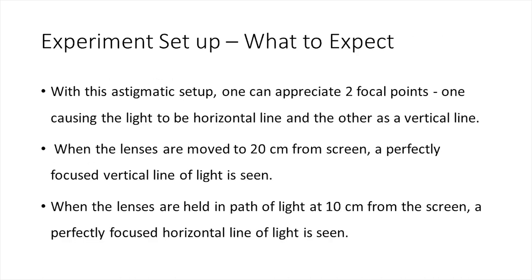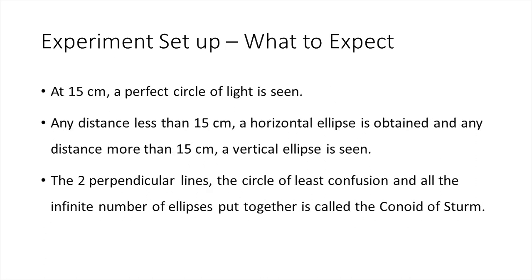So what should we expect from this experiment? Obviously, we are expecting to see two principal foci, one horizontal line and the other a vertical line. When the lenses are held at 20 centimeters from the screen, a vertical line is seen and this is the first principal focus. And when the lens is at 10 centimeters from the screen, a horizontal line, which is the second principal focus should be seen. At 15 centimeters, a more or less perfect circle should be expected as that is the midpoint of the two foci and the position of the circle of least confusion.